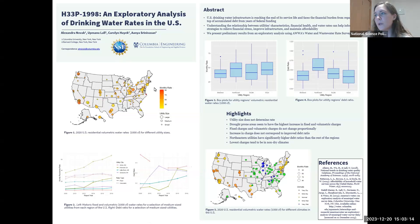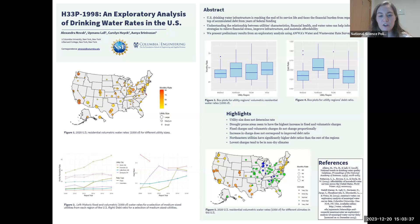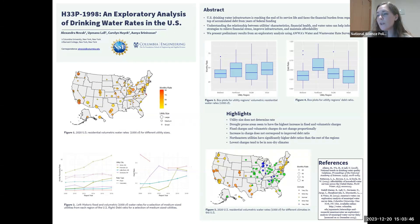Hi, everyone. Welcome to NSPN's second T-Talk. The goal of the T-Talks is to provide a casual platform for NSPN members to practice presenting their work to their peers, and also a safe space to receive constructive feedback about their presentation and policy work. Today, Ali Novak is going to be discussing how data is being used to identify trends in public and private drinking water utility governance in her talk titled An Exploratory Analysis of Drinking Water Rates in the U.S.